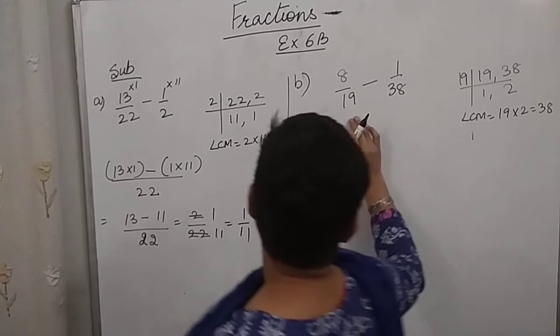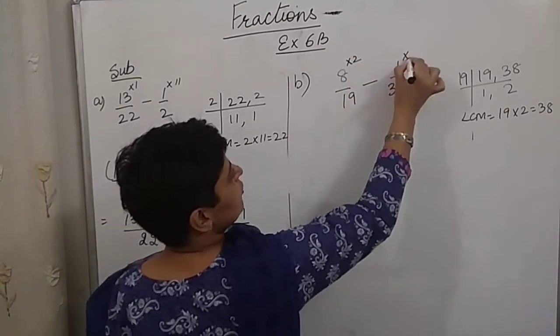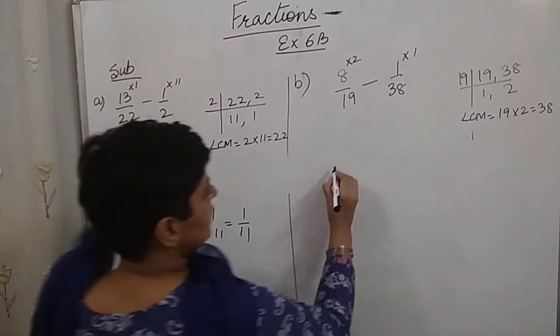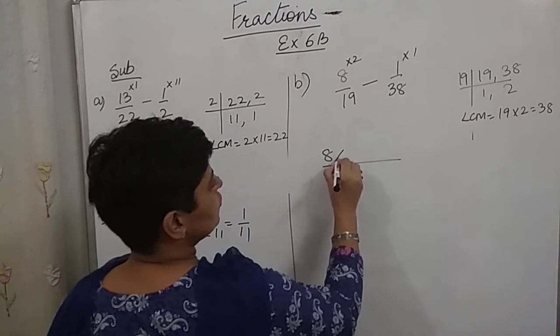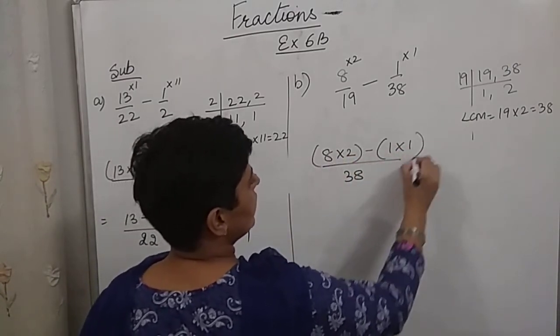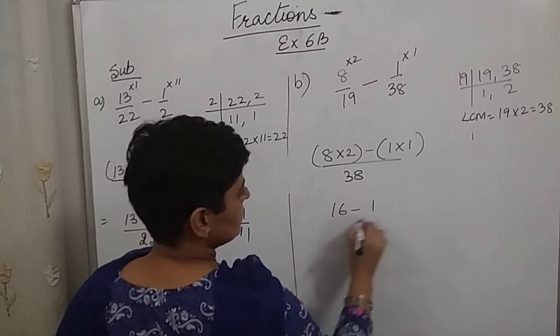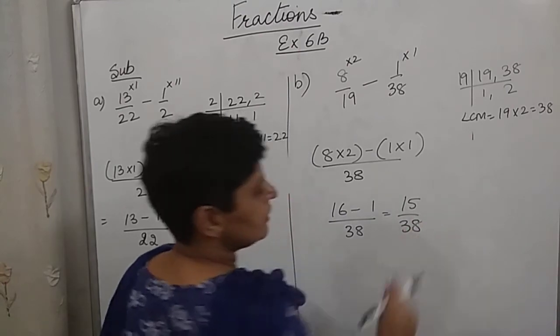So 19 multiplied by which number gives 38? 2. And 38 into 1 is 38. So LCM will be 38. 8 into 2 minus 1 into 1. It becomes 16 minus 1, which is 15 by 38.